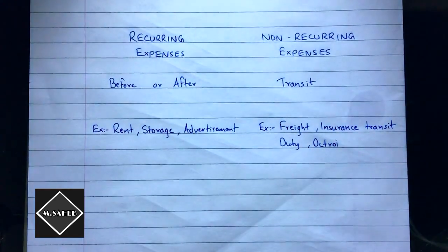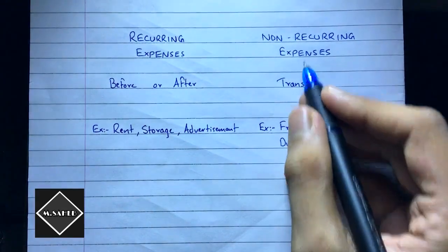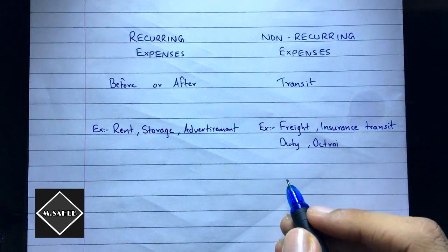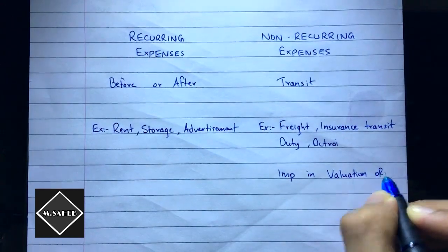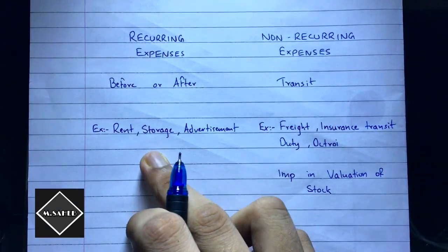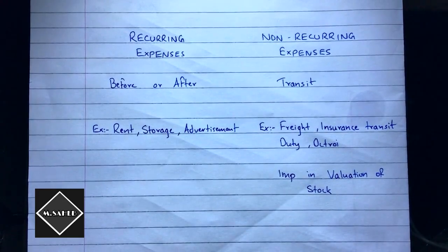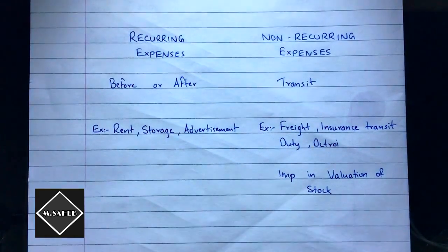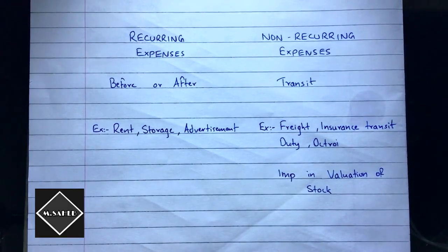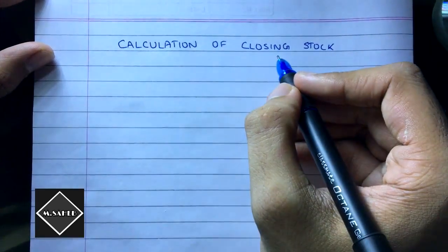This is the major difference between the two. In the valuation of consignment stock, only non-recurring expenses need to be considered. If you want to understand more about these expenses, you can watch the introduction of this topic for more detail.